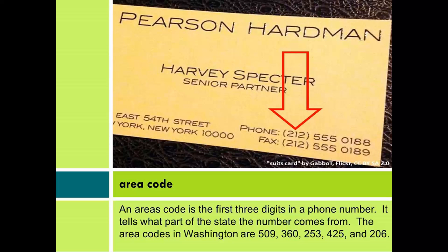Area code. An area code is the first 3 digits in a phone number. It tells what part of the state the number comes from. The area codes in Washington are 509, 360, 253, 425, and 206.